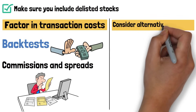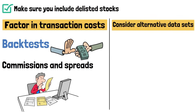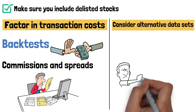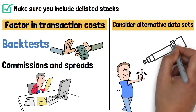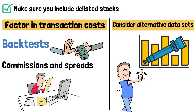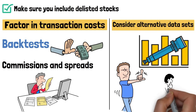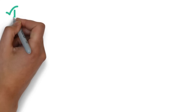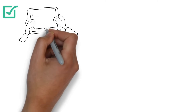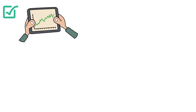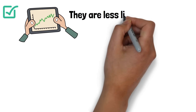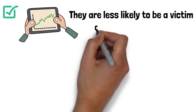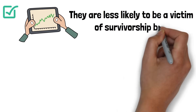Consider alternative data sets. Don't limit yourself to a single historical period – test across various market conditions to assess these strategies' adaptability. Consider trading indexes, as they're less likely to be a victim of survivorship bias.